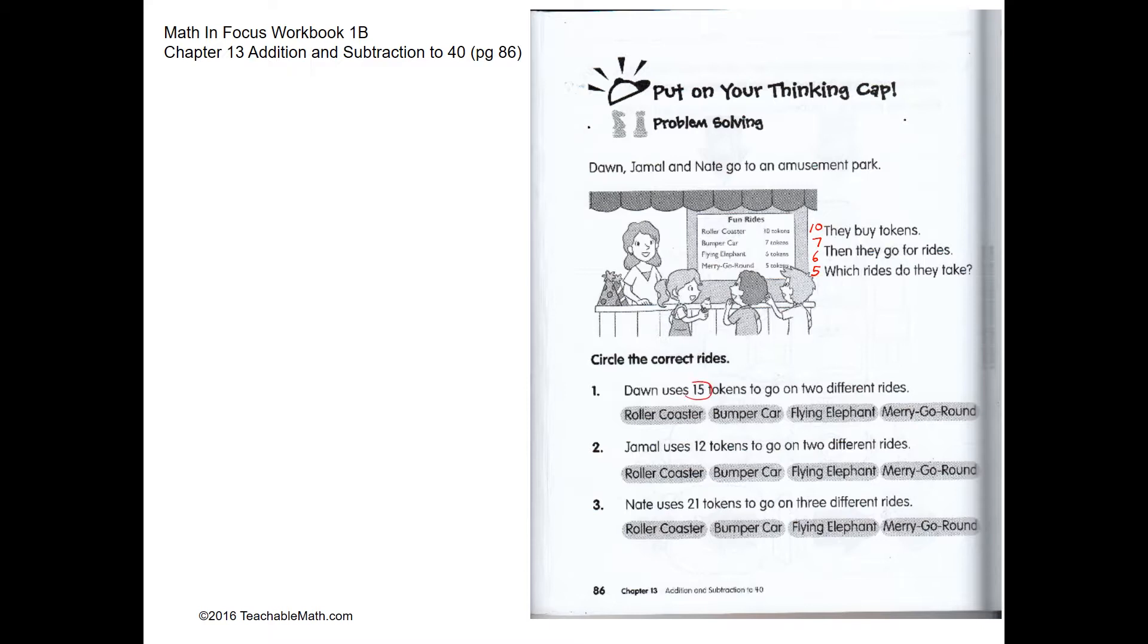So Dawn uses 15 tokens to go on two different rides. In this case the roller coaster needs ten and the merry-go-round needs five. So it will be roller coaster and merry-go-round.